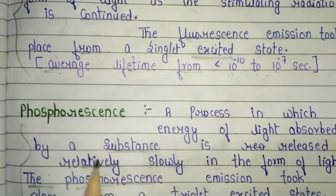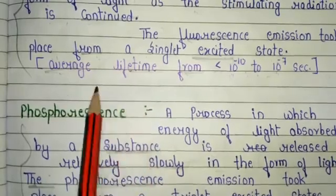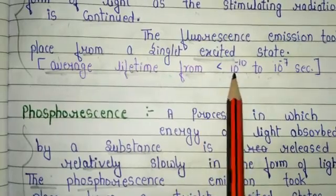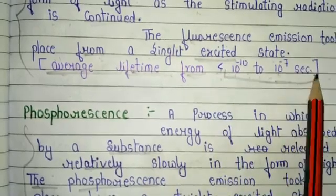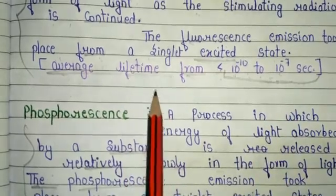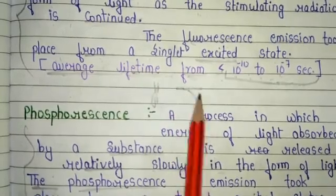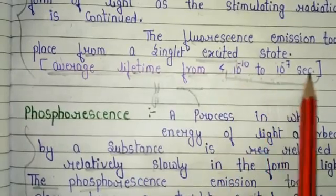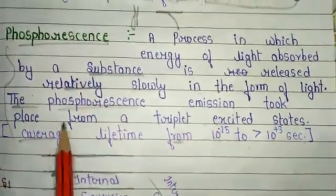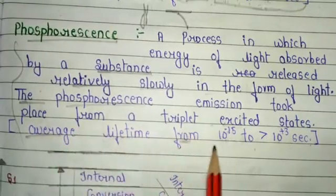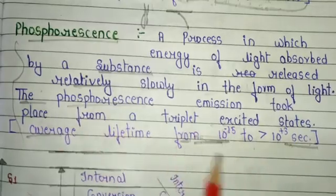The average lifetime of the fluorescence phenomenon is less than 10 to the power minus 10 to 10 to the power minus 7 seconds — it is instantly re-emitted from the higher energy excited state. When the phosphorescence phenomenon occurs, the average lifetime required is 10 to the power minus 15 to more than 10 to the power plus 3 seconds. These are very important points of fluorescence and phosphorescence.